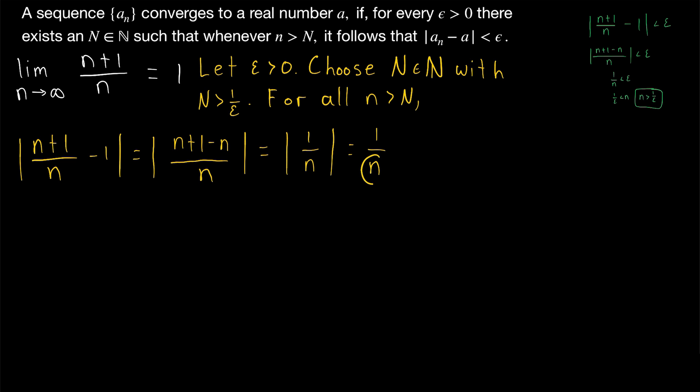Then we want to consider what would happen if we replaced n with 1 over epsilon. Since n is greater than big N, it's also greater than 1 over epsilon. So we would be replacing n with a smaller number. That means we would have 1 divided by a smaller number. Dividing by a smaller number results in a bigger quotient. So we would make the number bigger if we replaced n with 1 over epsilon. So 1 over n is less than 1 over 1 over epsilon. Again, that's because n is greater than 1 over epsilon. So dividing by that smaller number, 1 over epsilon, makes the expression as a whole bigger. And my friends, what is 1 over 1 over epsilon equal to?